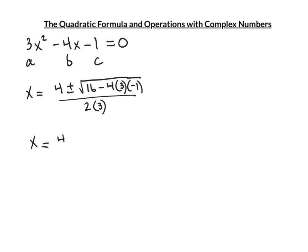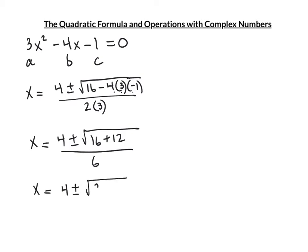This is 4 ± √(16 — notice the double negative: minus and negative gives plus — so 16 + 12) / 6. x = 4 ± √28 / 6.